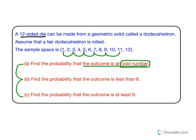The second one is to find the probability that the outcome is less than 8. What's important for you to know is when we say less than 8, we mean anything strictly less than 8, so 8 is not included—meaning 1, 2, 3, 4, 5, 6, 7. Those are the numbers that are less than 8.